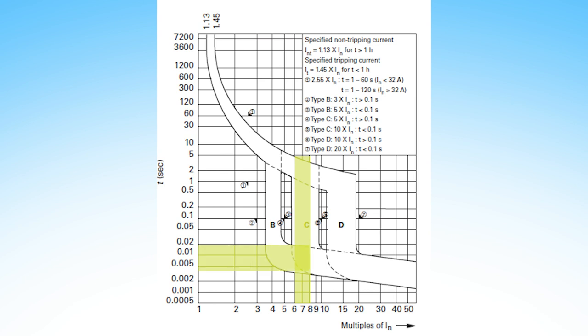We can see on a B or C curve this amount of current would trip the breaker in well under 0.01 seconds. This would not be enough time for a motor to start and the current to come down, but on the D curve this gives us at least one second, which should be plenty of time for the inrush to subside.